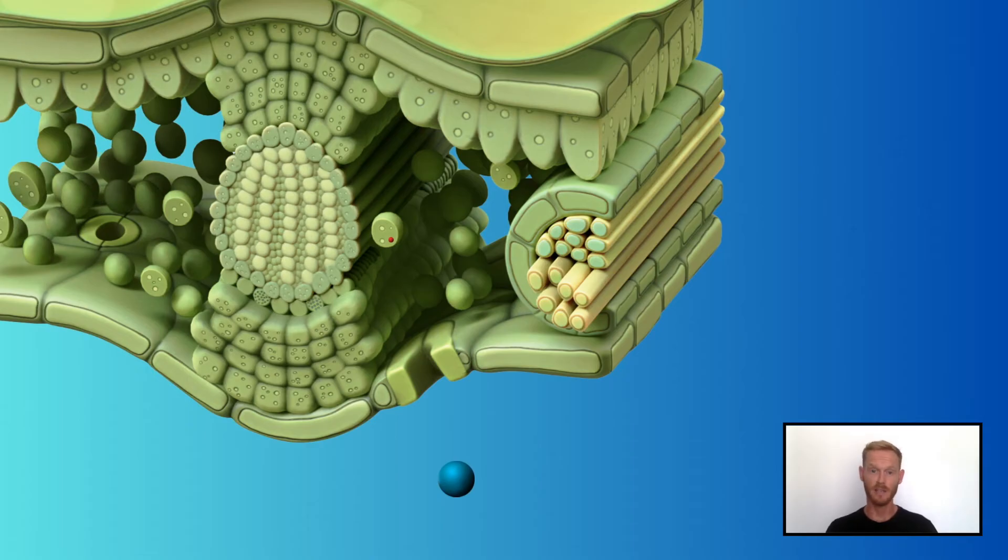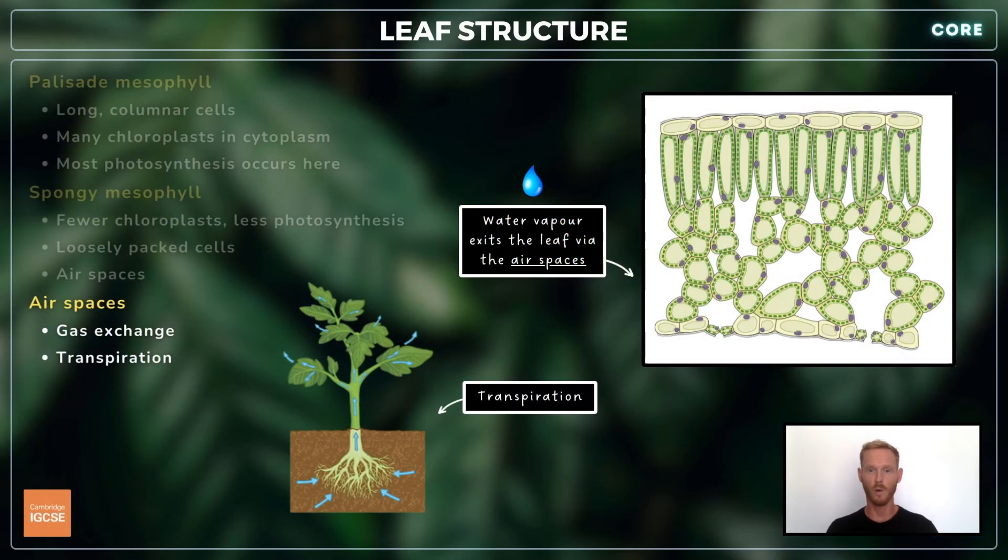The airspaces of the spongy mesophyll also play an important role in the process of transpiration, which we'll cover in detail in chapter 8. Water vapour moves into the airspaces from the surrounding cells and out of the leaf through the stomata.